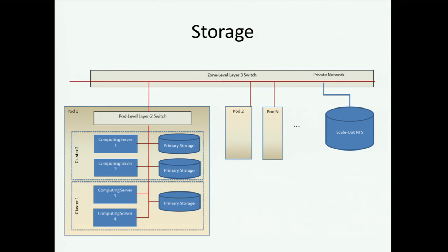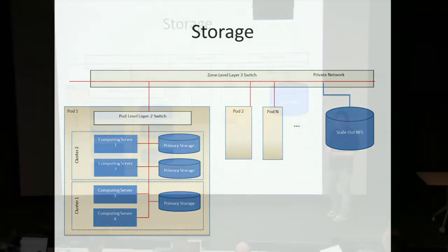The other one is secondary storage, which is basically where we store our templates, our ISOs, and all of our snapshot archiving — and the majority of what's in this storage is snapshot archiving. The third one, introduced in 3.0, is the object store. Secondary storage is inside a particular zone, whereas the object store is actually outside the zone and would be available between zones.